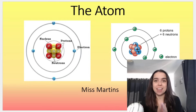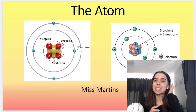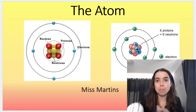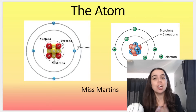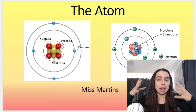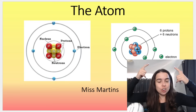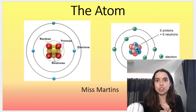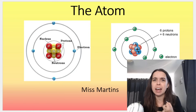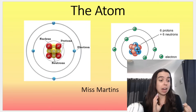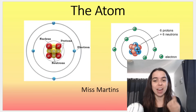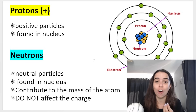Understanding the atom is very important in chemistry — it's one of the most important things you're going to learn. It forms the basis of a lot of other sections. You need to understand the atom, its structure, electrons, and orbitals in order to understand how to name chemical compounds, electron configuration, orbital diagrams, half bar diagrams, and chemical bonding.